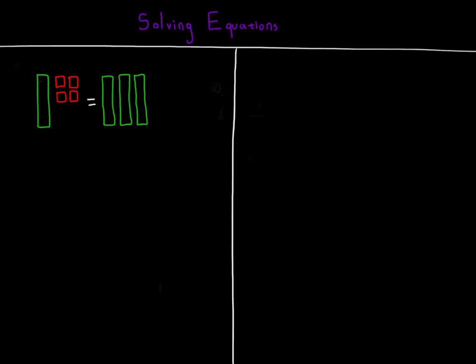Here's one last example, beginning with the model. We have a single green bar and 4 red squares on the left side of the equation. The green bar represents a single x, and the 4 red squares represent minus 4. On the right side of the equation, we have 3 green bars and no units of any kind. So we represent the 3 green bars with 3x.